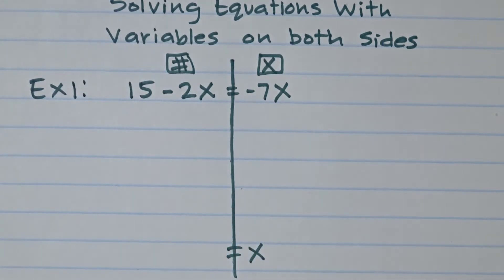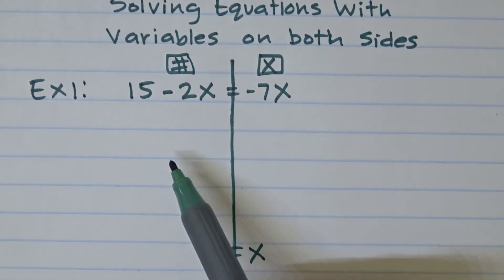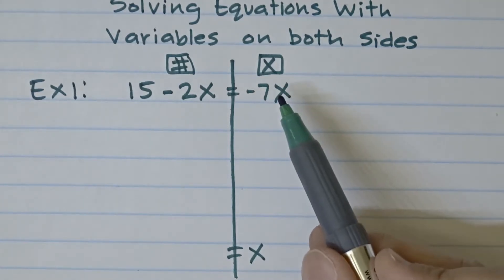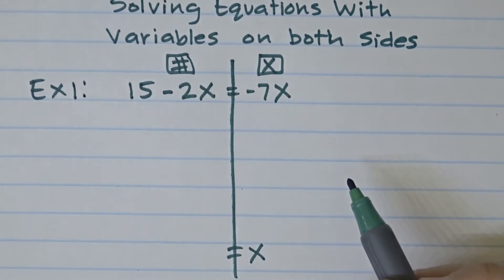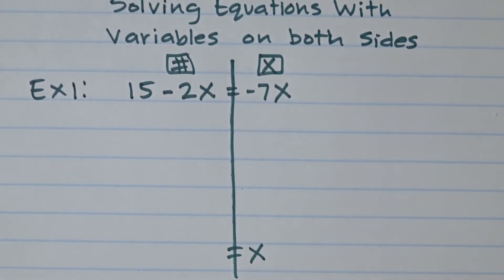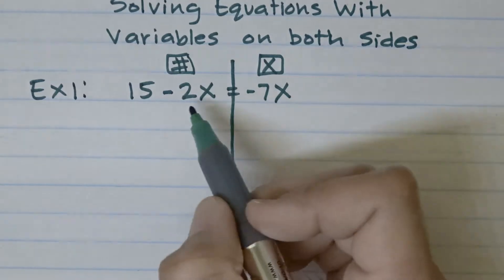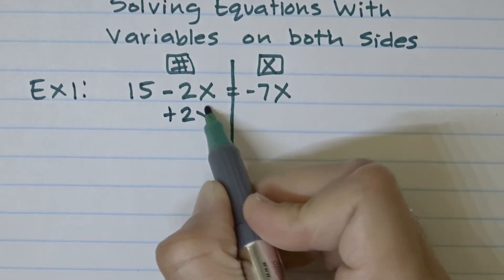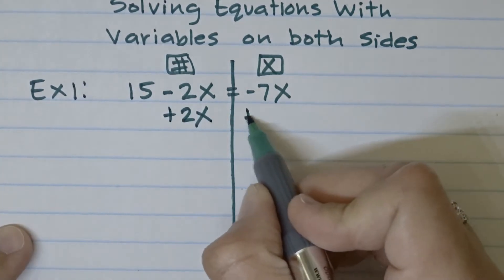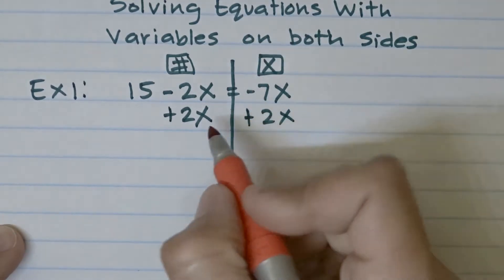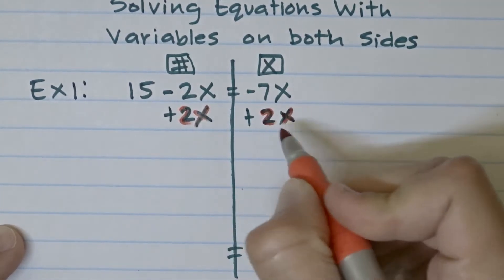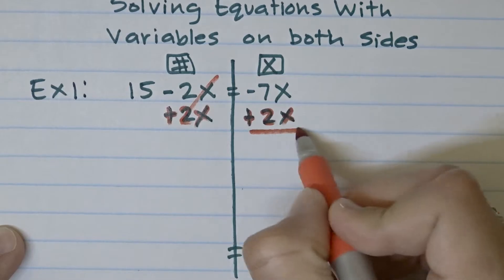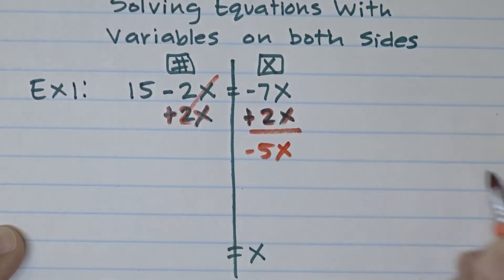If I had chosen the left side for x terms, two things would have been in the wrong place, requiring two steps. So choosing the right side is best — only one term needs to move. Since negative 2x is subtraction of 2x, the only way to get rid of it is to add 2x to both sides.